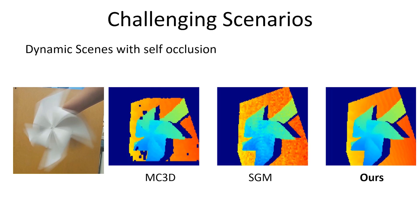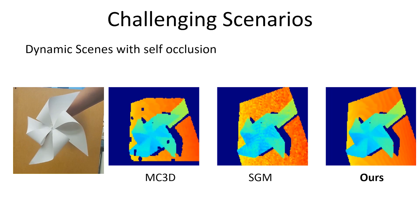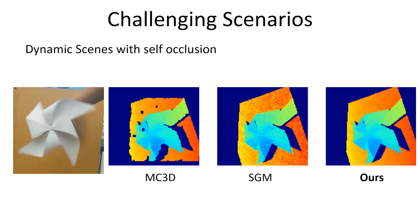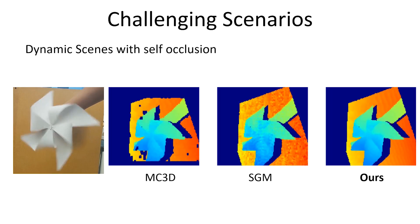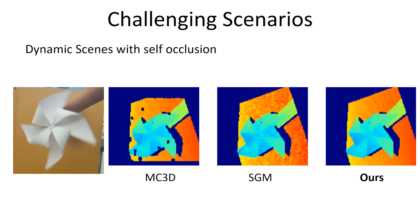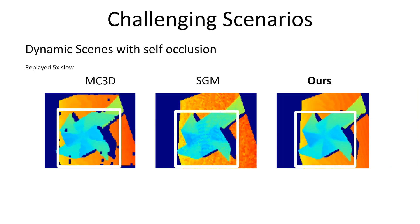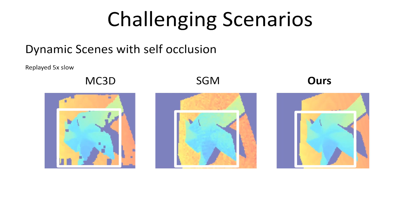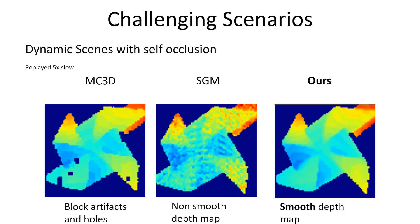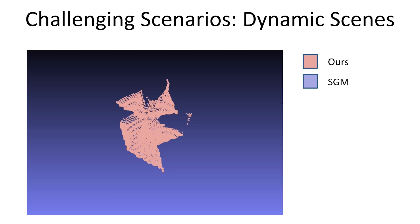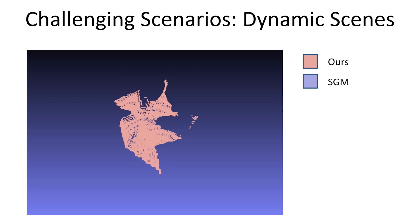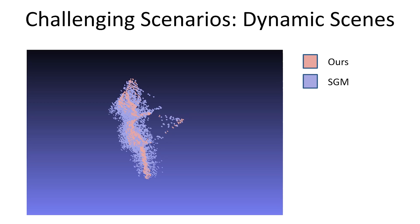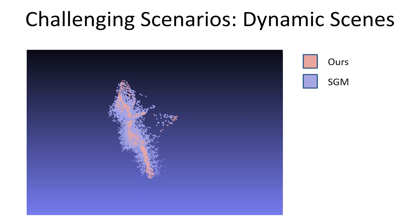In the origami fan sequence, the noise in the event timestamps results in severe artifacts in the SGM baseline. While MC3D is slightly better, it also results in over-smoothing, thus losing the depth edges. In comparison, our method outperforms these approaches.